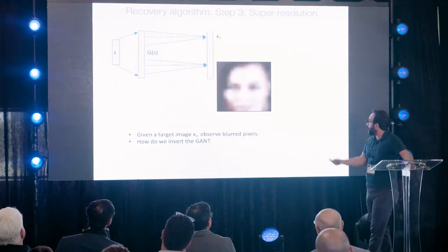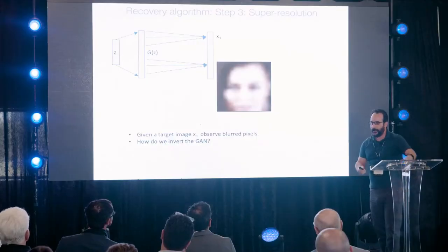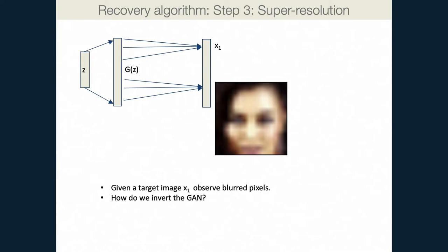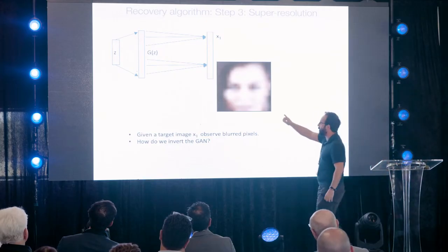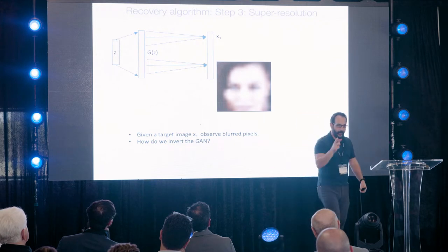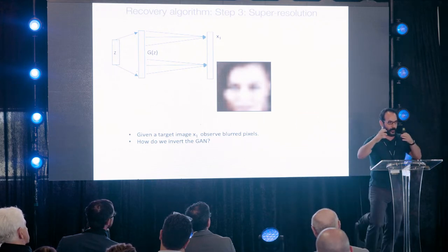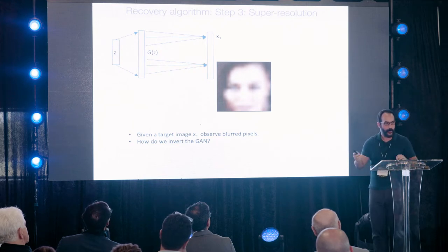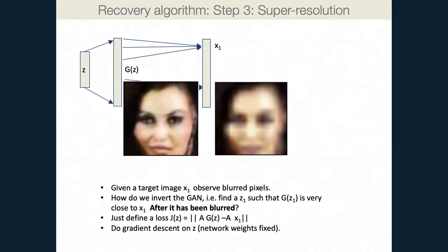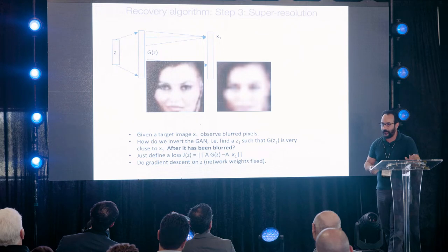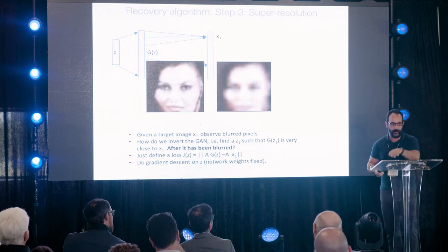For super resolution, you've heard 'enhance' in movies. You search for a latent vector Z that produces a person such that after blurring, it matches the blurry observations. You write the math, do gradient descent, and get a pretty good image. You probably shouldn't arrest anyone based on it because of biases, but it's a state-of-the-art super resolution algorithm.